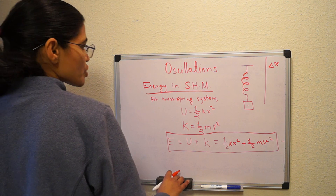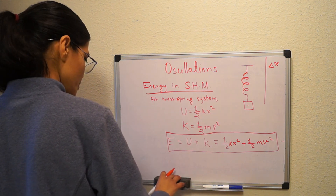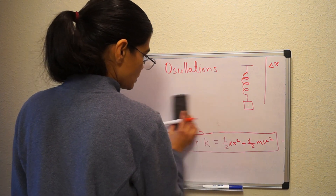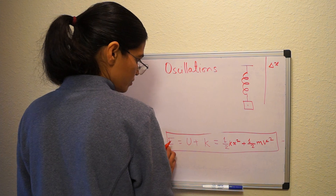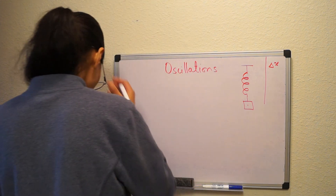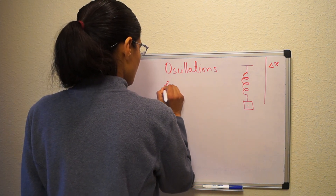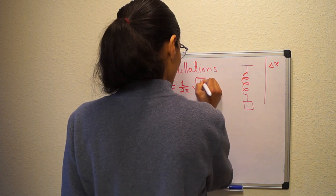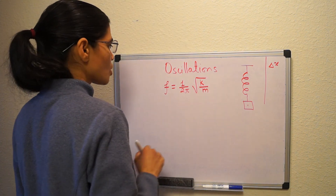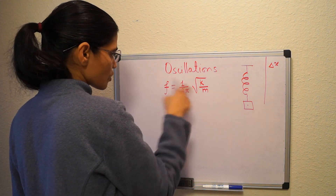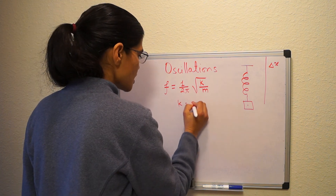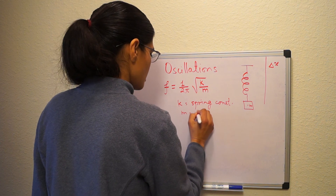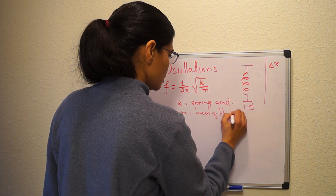We also wrote the equation for the frequency of oscillation of a mass-spring system: f = (1/2π)√(k/m). Using this equation we can find the frequency, where k is the spring constant and m is the mass of the block on the spring.